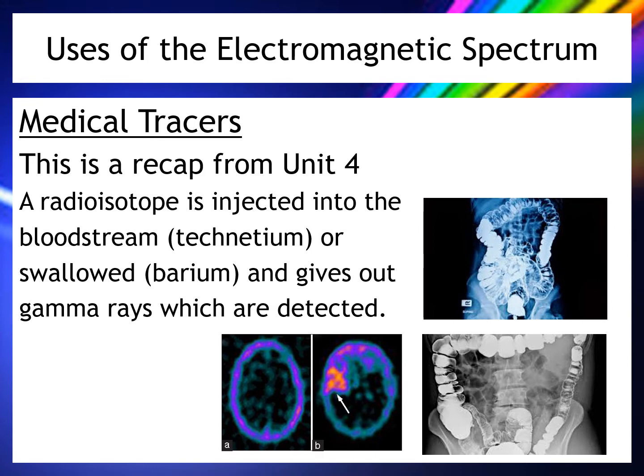Medical tracers work by taking a radioisotope and putting it into the body, attached to a particular kind of cell. For example, technetium might be injected into the bloodstream, or barium swallowed to examine the gut. The radioisotope travels through the body and gives off gamma radiation, detected using a photographic plate, producing clear images of the inside of the body. A concentration of gamma radiation in one area might indicate a blockage, such as a blood clot or gut obstruction.